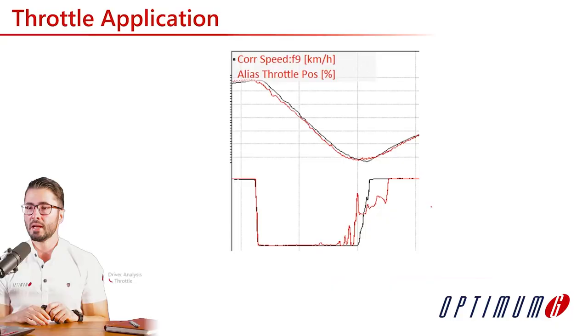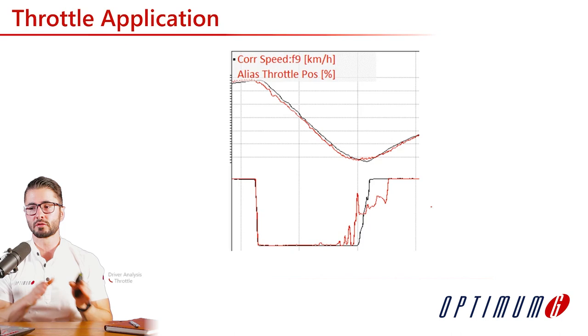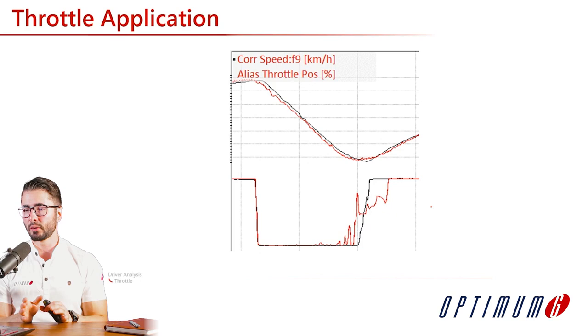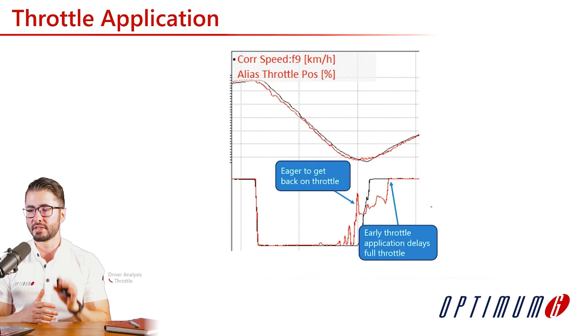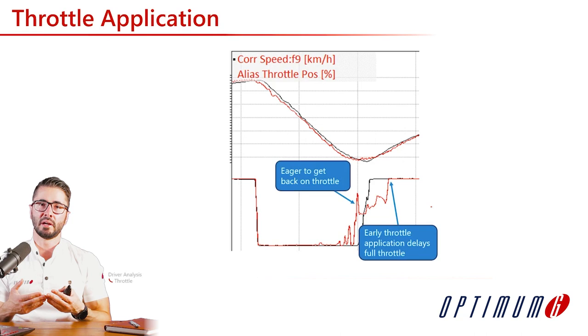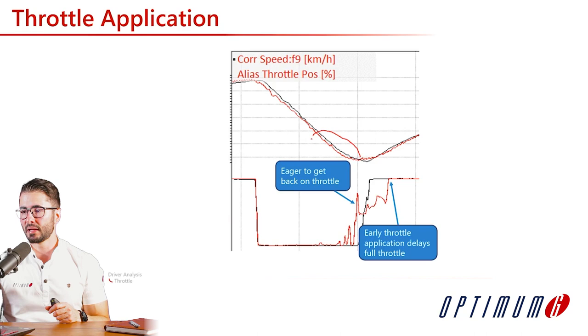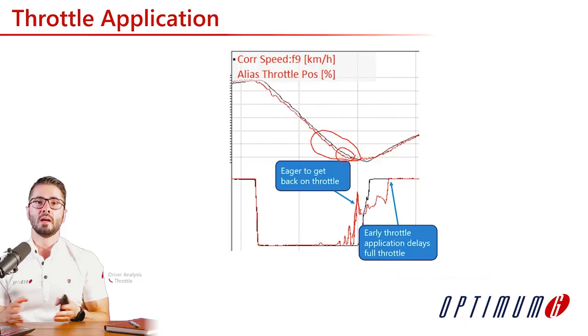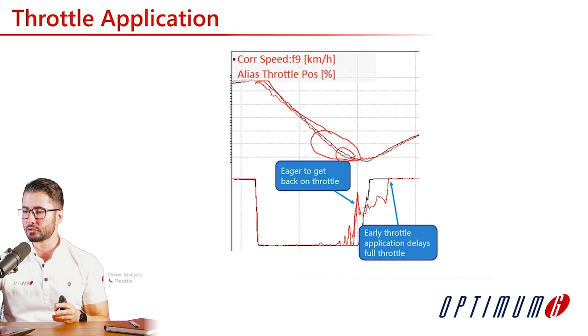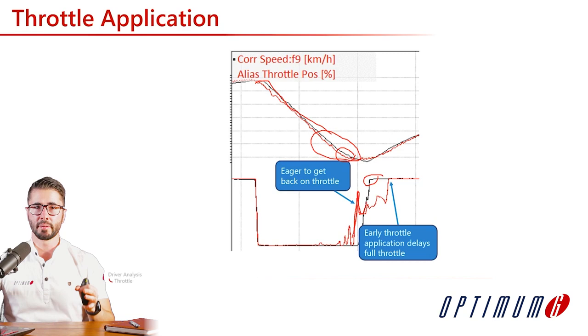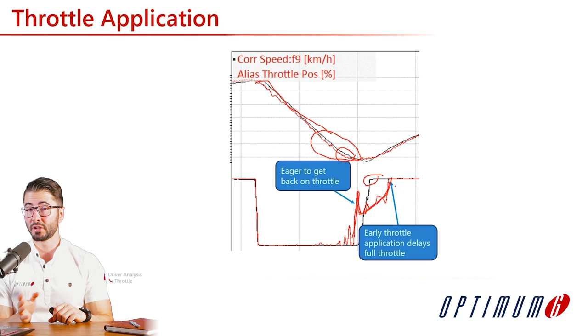Looking at throttle application: the red driver is trying to apply the throttle much earlier. If we look at the speed trace, he carried a lot less speed. He probably noticed he could go back on the throttle earlier, but by applying throttle early, he could never reach full throttle. He needed to delay probably because this caused understeer or oversteer. He could only apply full throttle a few meters later, so he's probably losing time.